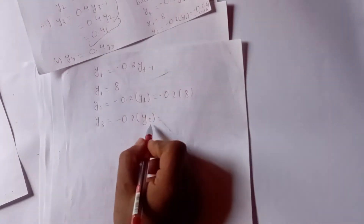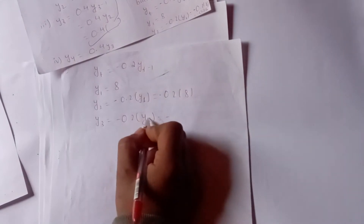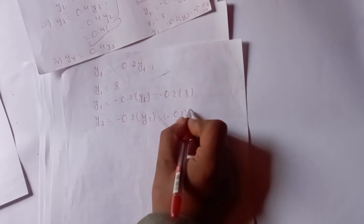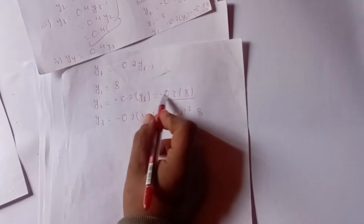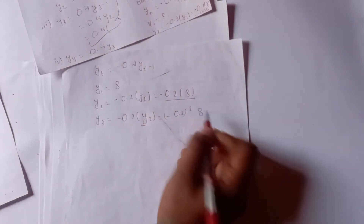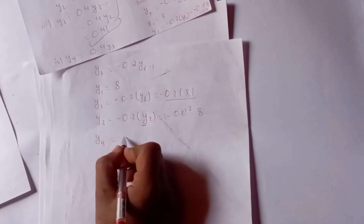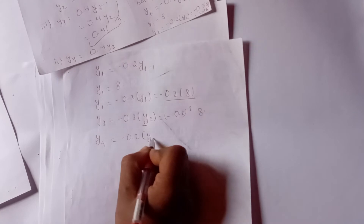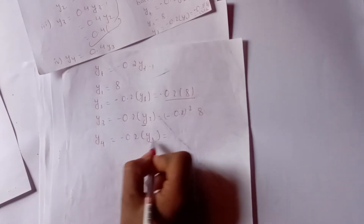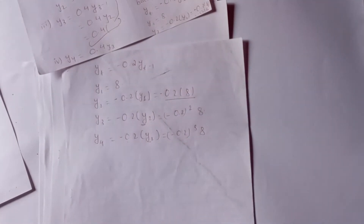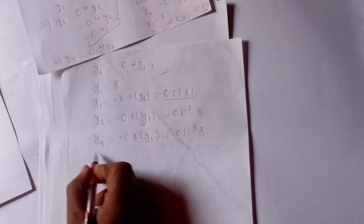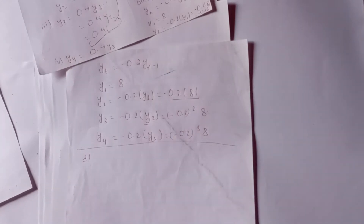y2 equals y2. So y2 equals minus 0.2 times y. y3 equals minus 0.2 times y of t minus 1, meaning y3 equals minus 0.2 times y2. We multiply this by 0.2, 3 times 8. Now we have question number 2.